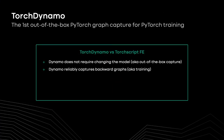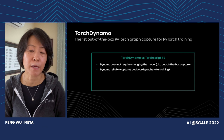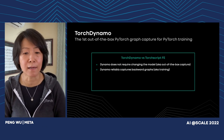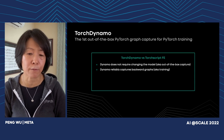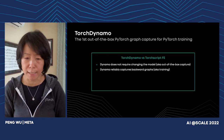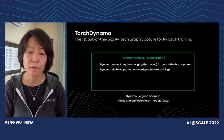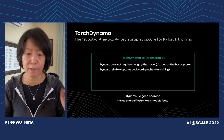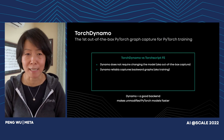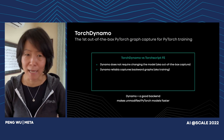Let me introduce TorchDynamo — our next-generation PyTorch compiler front-end. It is our first one that is out-of-box and also works for training. Comparing TorchDynamo with TorchScript's front-end: Dynamo doesn't require users to change the model, so we call it out-of-box graph capture. Secondly, it can reliably capture backward graphs, making it suitable for training. If you use Dynamo combined with a good backend, in theory — and in reality, as I'll show — you can make unmodified PyTorch models faster.